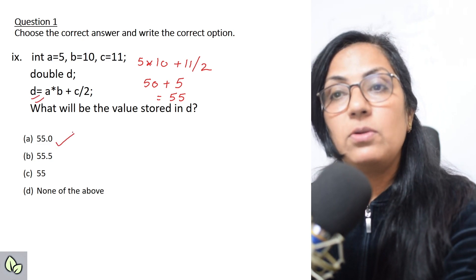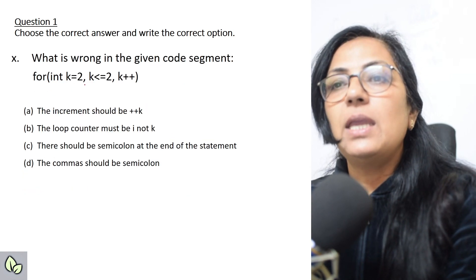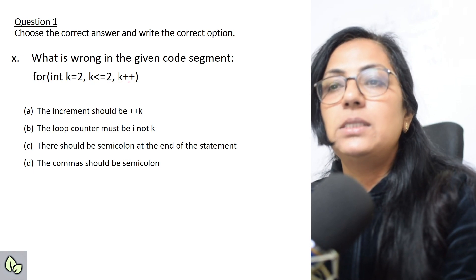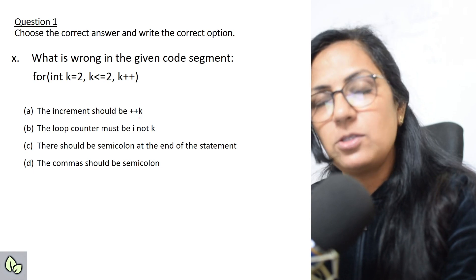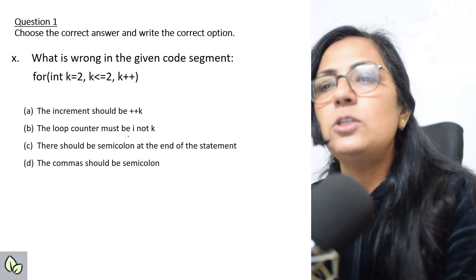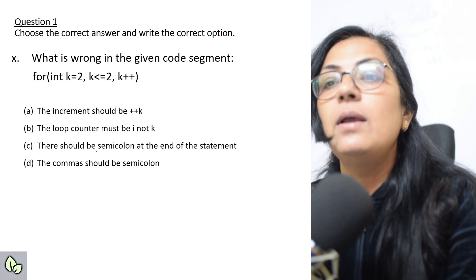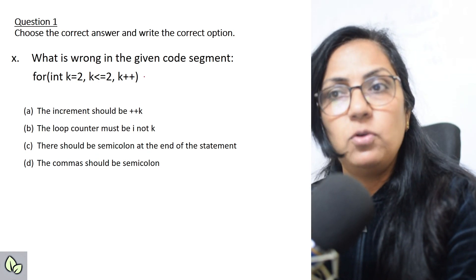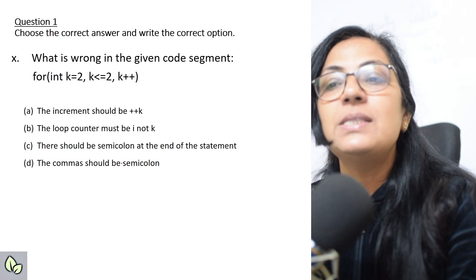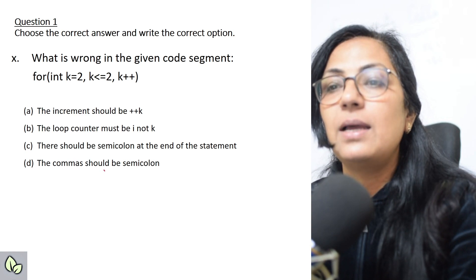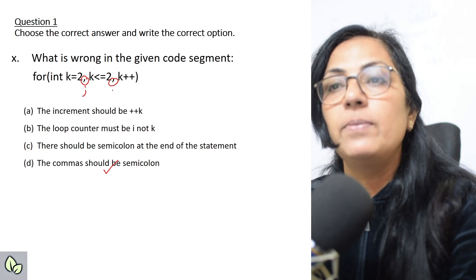We move on to the next question. What is wrong in the given code? for int k equals to two, k less than equals to two, and k plus plus. The increment should be plus plus k? No, k plus plus or plus plus k both are correct. The loop counter should be i not k? We can use any looping variable name. All of you know that there should be semicolon at the end of the statement? Do we put semicolon here? Many children put, but that is not correct. The commas should be semicolon? Yes, this is the correct answer. In place of comma here, it should be semicolon.